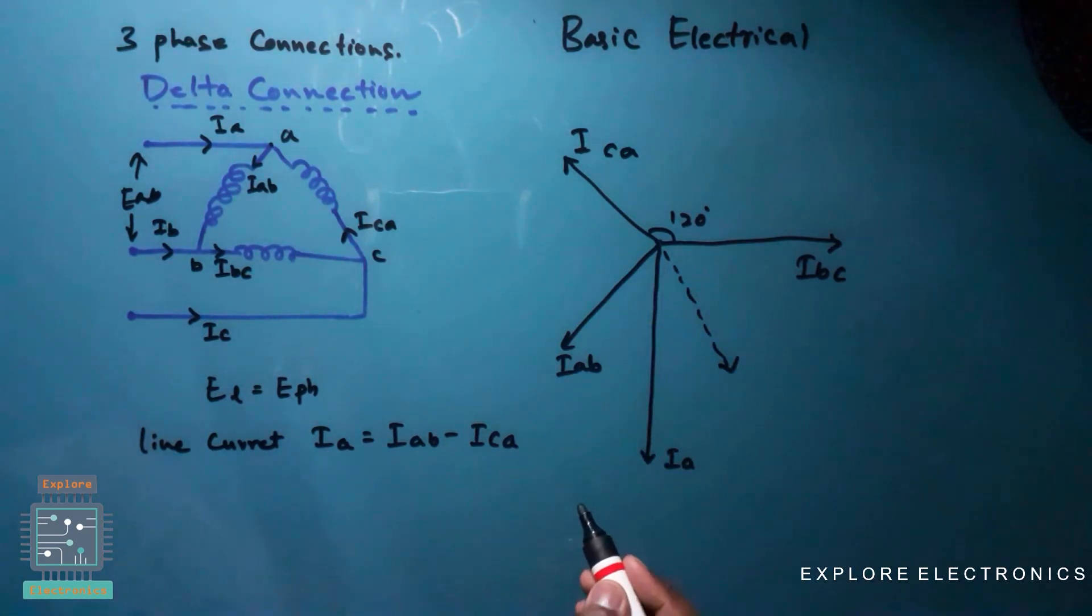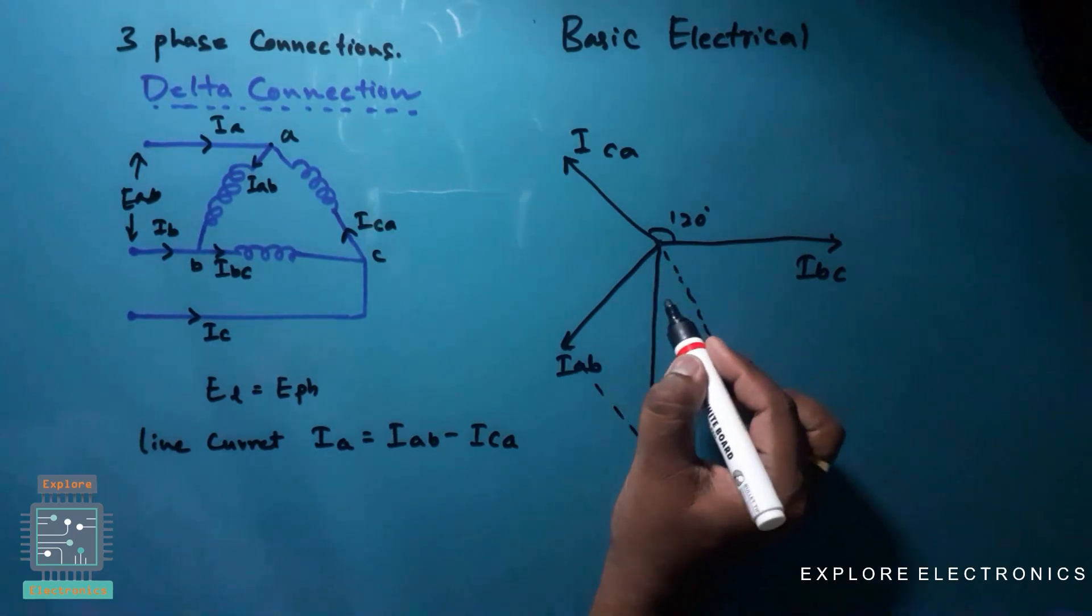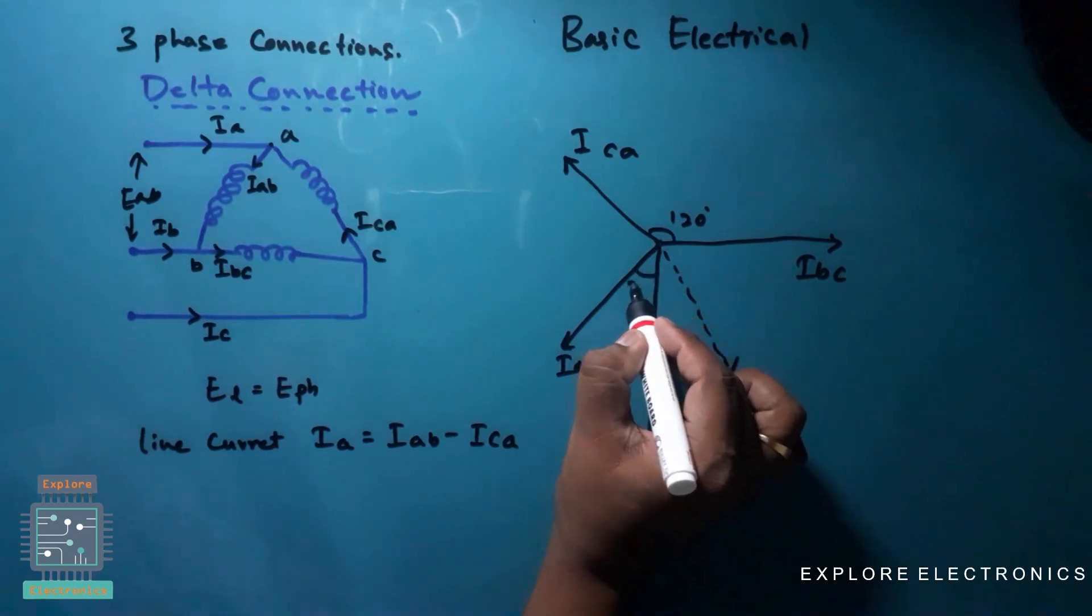This is Ia. So now I am going to connect these two, and we know that the total angle is 120 degree, so this becomes 60, so this becomes 30 degree.